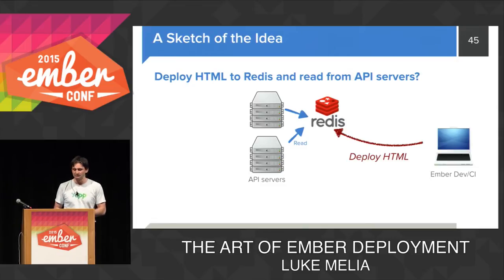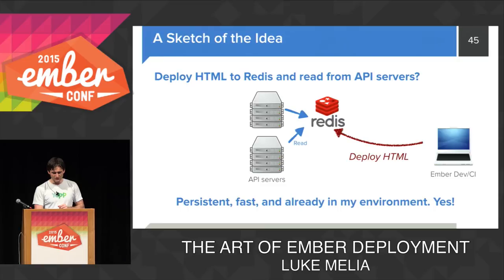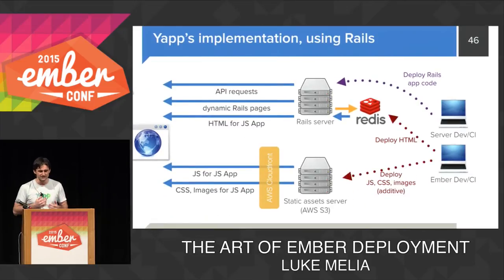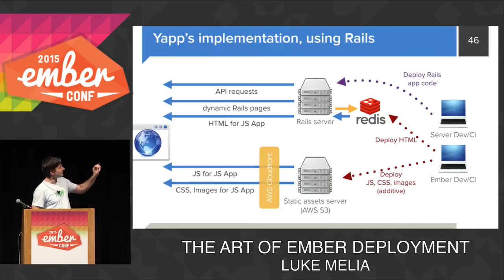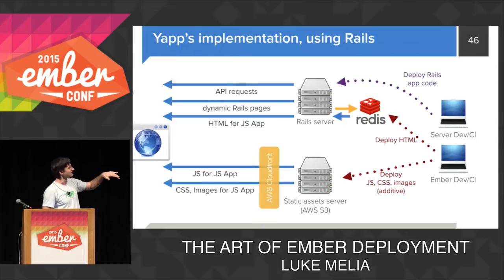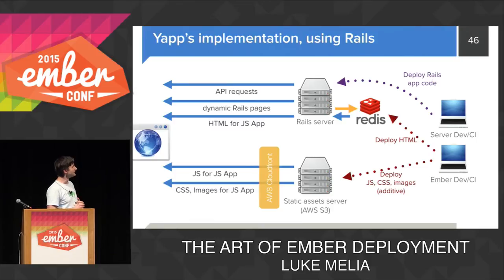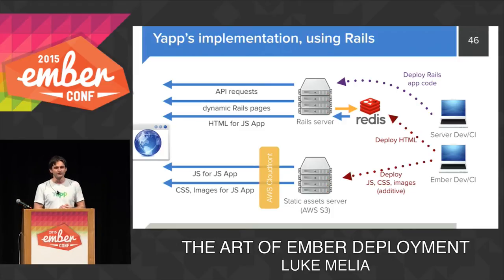As an example of how this looks in a full environment: this is YAPP's implementation with a Rails backend. We have our HTML being deployed into Redis, our Rails server reading that HTML out of Redis and serving it up. Our static assets go to S3, with CloudFront sitting in front as a CDN. This process works really well, and not only does it solve the problems we looked at earlier, but it also opens up a huge world of emerging possibilities.